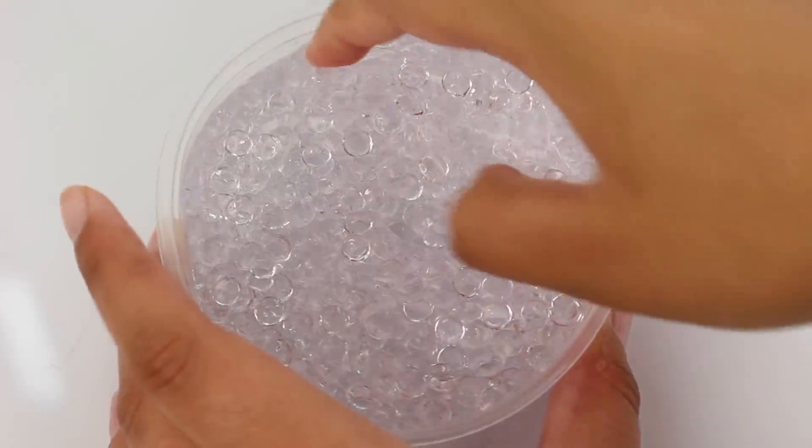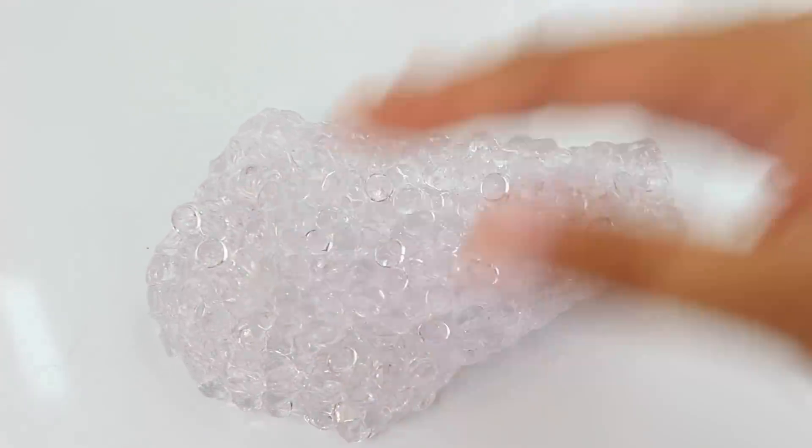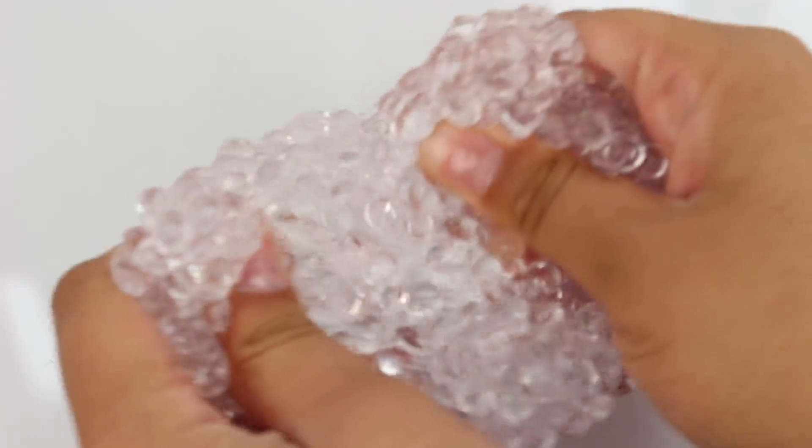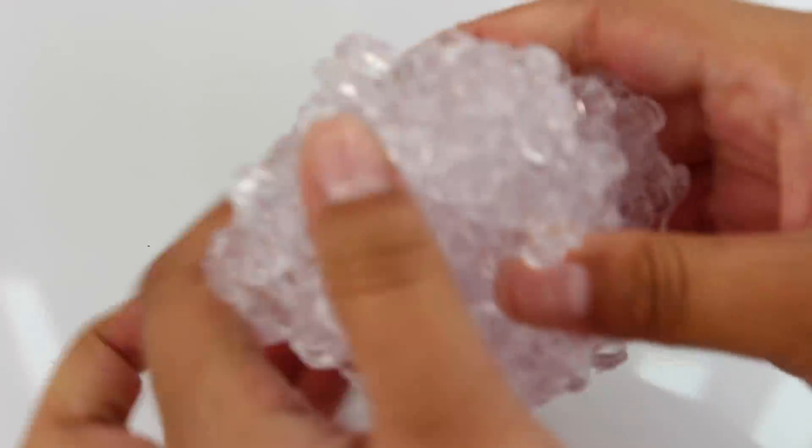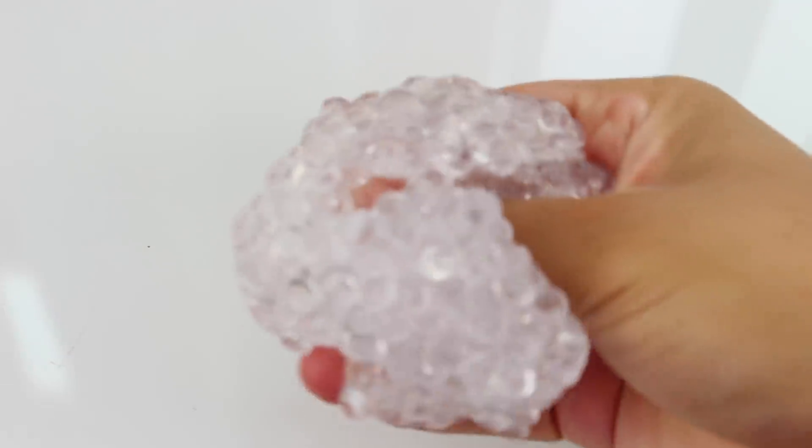Unicorn tears is an ultra clear, super crunchy fishbowl with pink and purple iridescent glitters. This fishbowl gives me slimy vibes because oh my gosh, it just reminds me of James' fishbowls. They're so crunchy and super stretchy as well. This one is just that. It's so nice and there's no bead fallout.